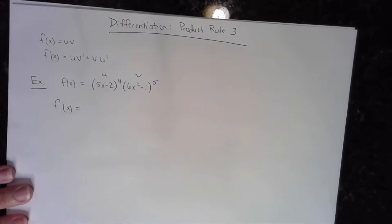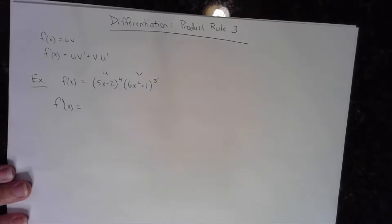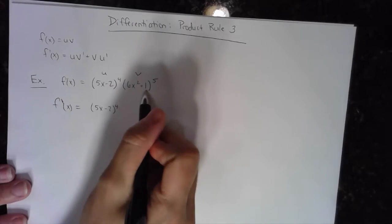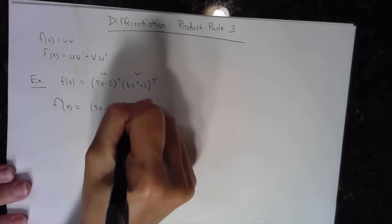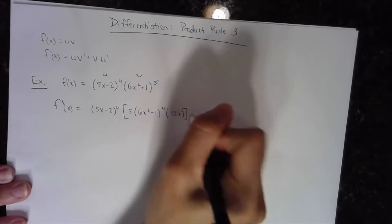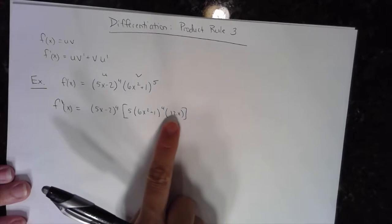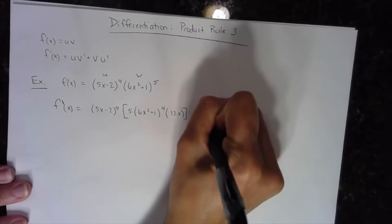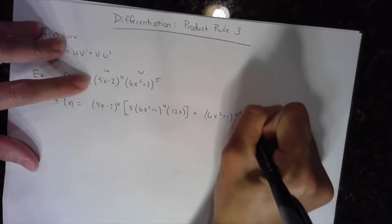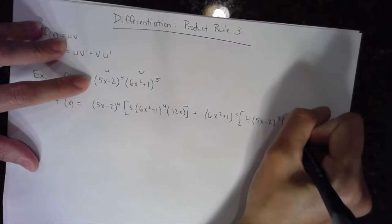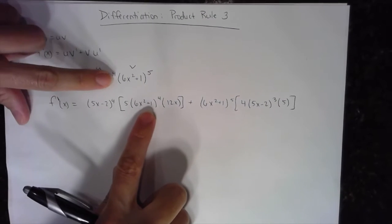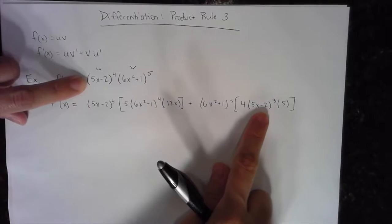So when I derive — the first is (5x − 2)⁴ times the derivative of the second, and the derivative of that is a chain rule: bring the 5 down, keep the base, subtract 1 from the exponent, and multiply by the derivative of the inside. Then plus the second times the derivative of the first, which is also another chain rule: bring the exponent down, keep the base, subtract 1 from the exponent, and multiply by the derivative of the inside.